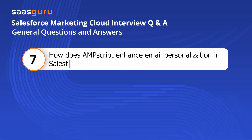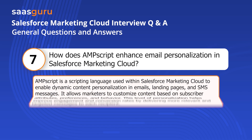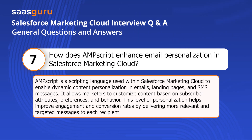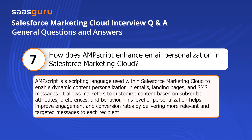Question seven: How does AMP Script enhance email personalization in Salesforce Marketing Cloud? AMP Script is a scripting language used within Salesforce Marketing Cloud to enable dynamic content personalization in emails, landing pages, and SMS messages. It allows marketers to customize content based on subscriber attributes, preferences, and behavior. This level of personalization helps improve engagement and conversion rates by delivering more relevant and targeted messages to each recipient.